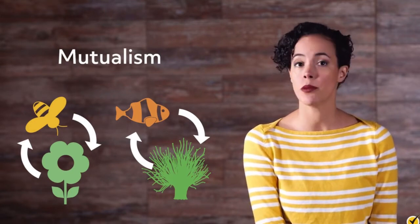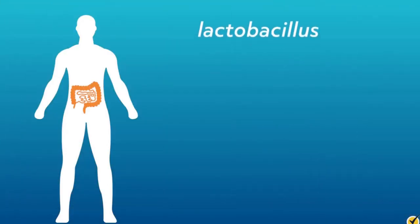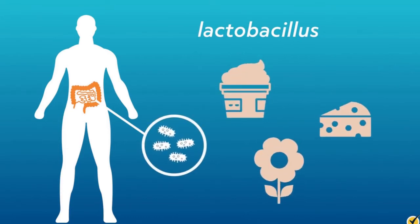Another example of mutualism that you may not have thought of is the symbiotic relationship between us, humans, and the bacteria in our gut. Take lactobacillus bacteria as a specific example. Lactobacilli are a common type of bacteria found in yogurt, cheese, and some plants. When you eat any of these foods, the bacteria make a home in your intestines by feeding off the sugars you eat, while simultaneously helping you digest that sugar. Both parties benefit, so this is also a mutualistic relationship.